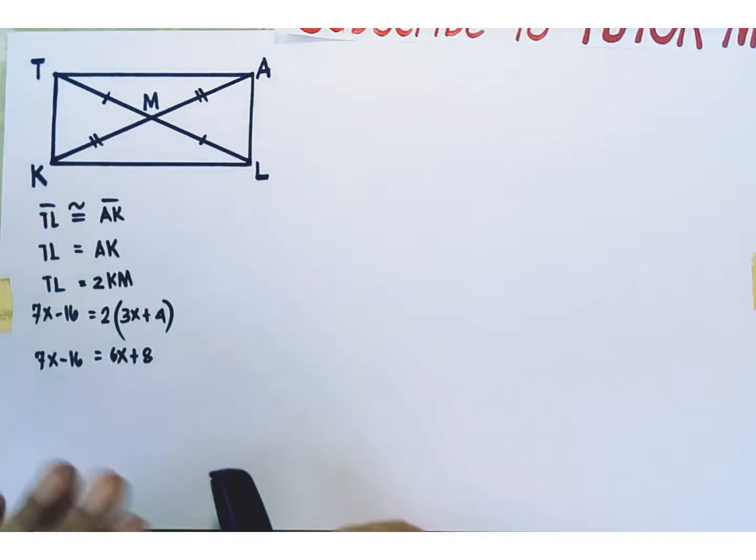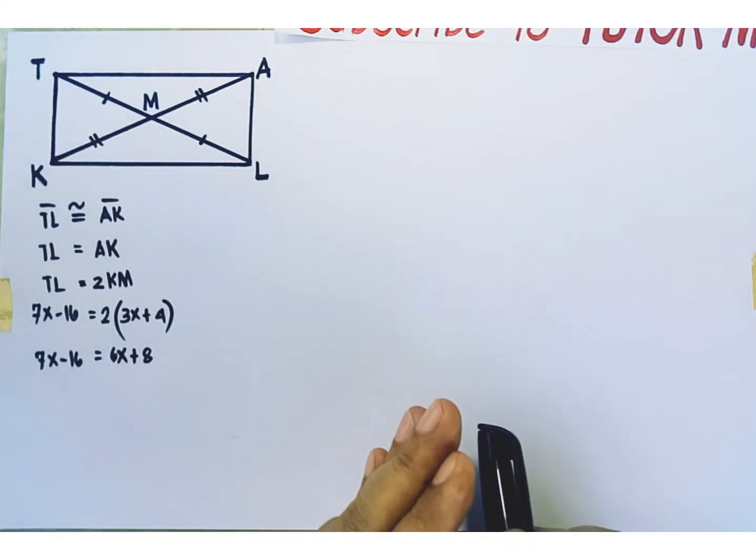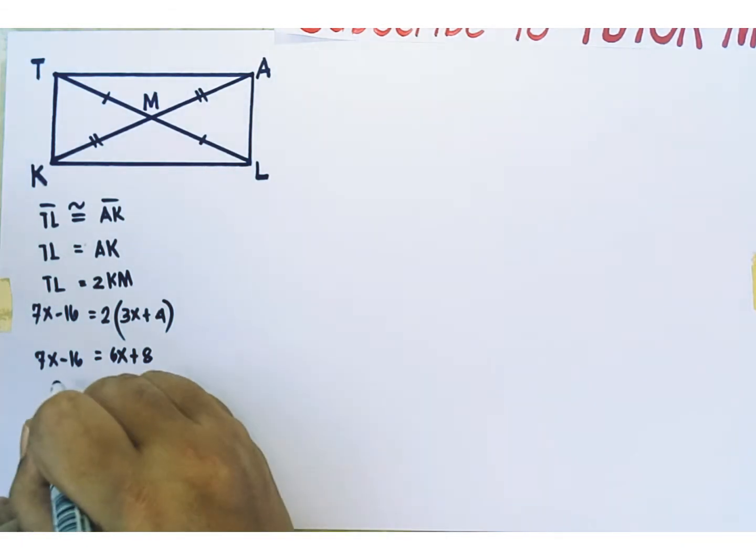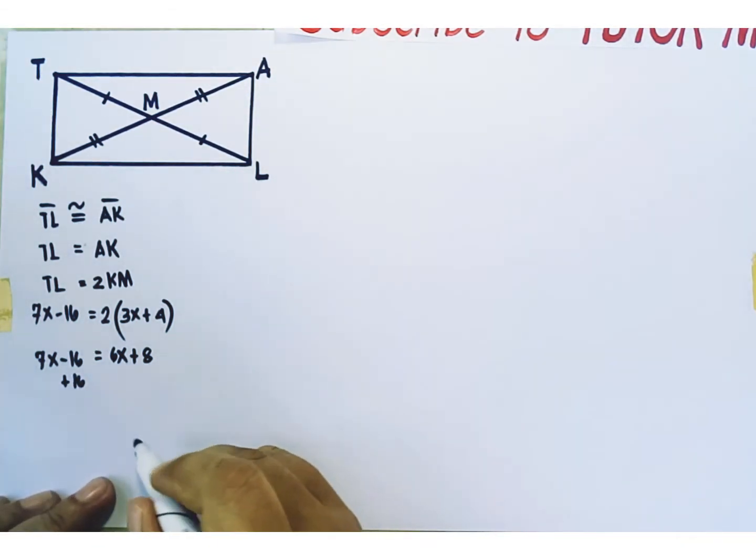After eliminating parentheses, we're now going to collect variable terms on the left side of the equation, constant terms on the right side of the equation. We don't need a constant term on the left side of the equation, so we have to get rid of negative 16 on the left side. Additive inverse of negative 16 is positive 16. So, we're going to use addition property of equality to remove this on the left side of the equation. Let's add 16 to both sides of the equation. Left side plus 16. Right side plus 16.